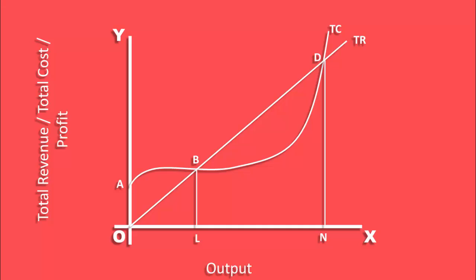So, in this range, there is one level of output for which the difference between total revenue and total cost is maximum. At OM level of output, the difference between total revenue and total cost is maximum.